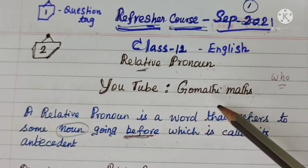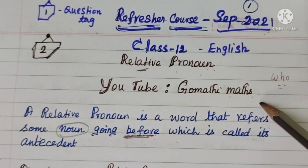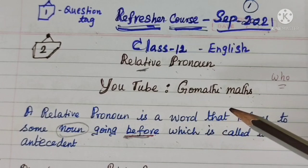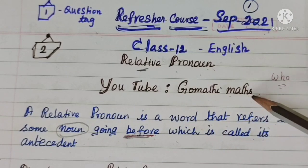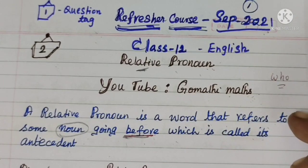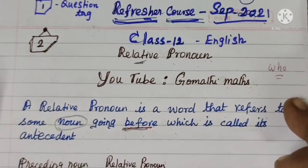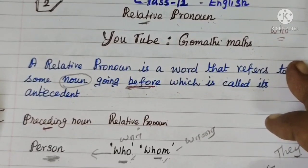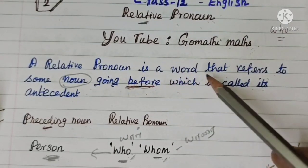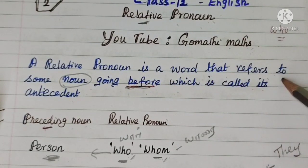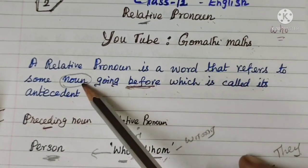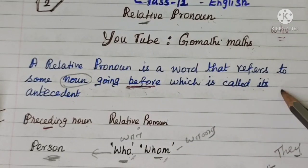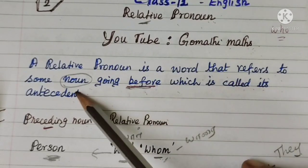This is from YouTube, Gomuthi Maths Channel. If you like this video, please share it with your friends. Thank you all. First of all, we see the relative pronoun definition. A relative pronoun is a word that refers to some noun going before it, which is called its antecedent.